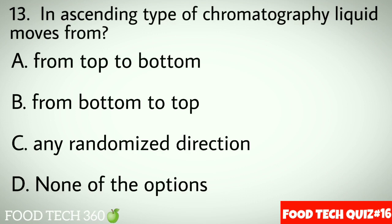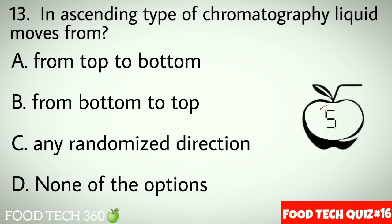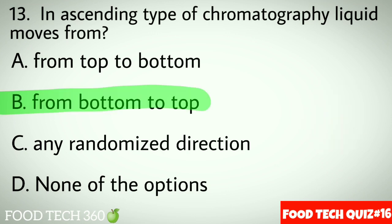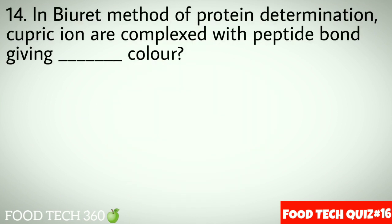Question No.13: In ascending type of chromatography, liquid moves from — Options A: From top to bottom. B: From bottom to top. C: In a randomized direction. D: None of the options. Correct answer B: From bottom to top.